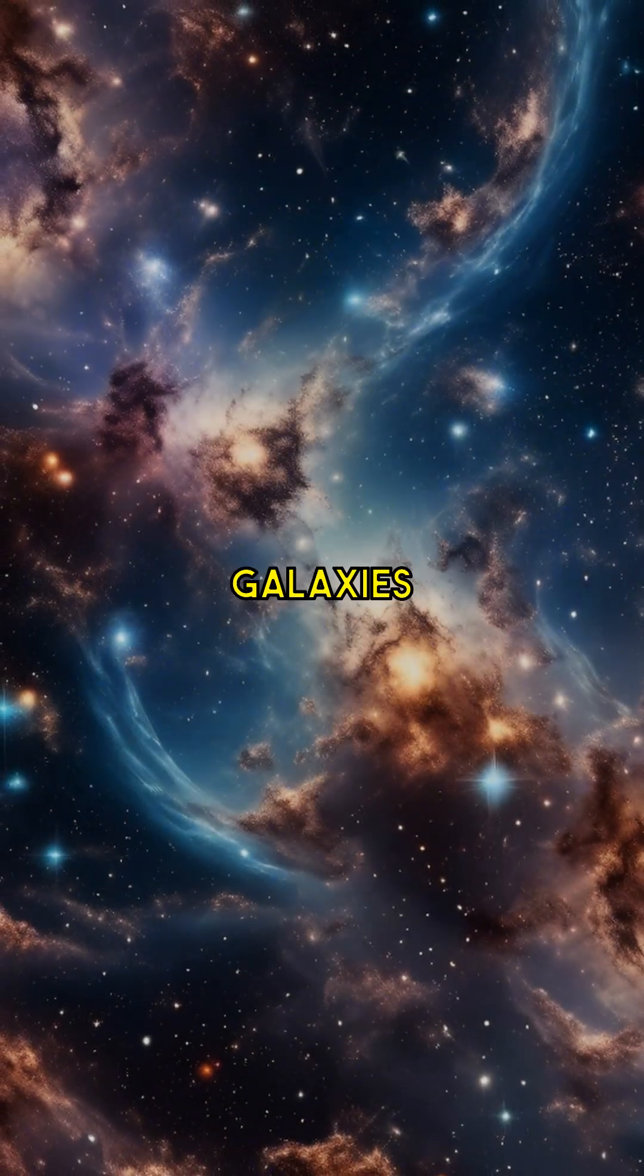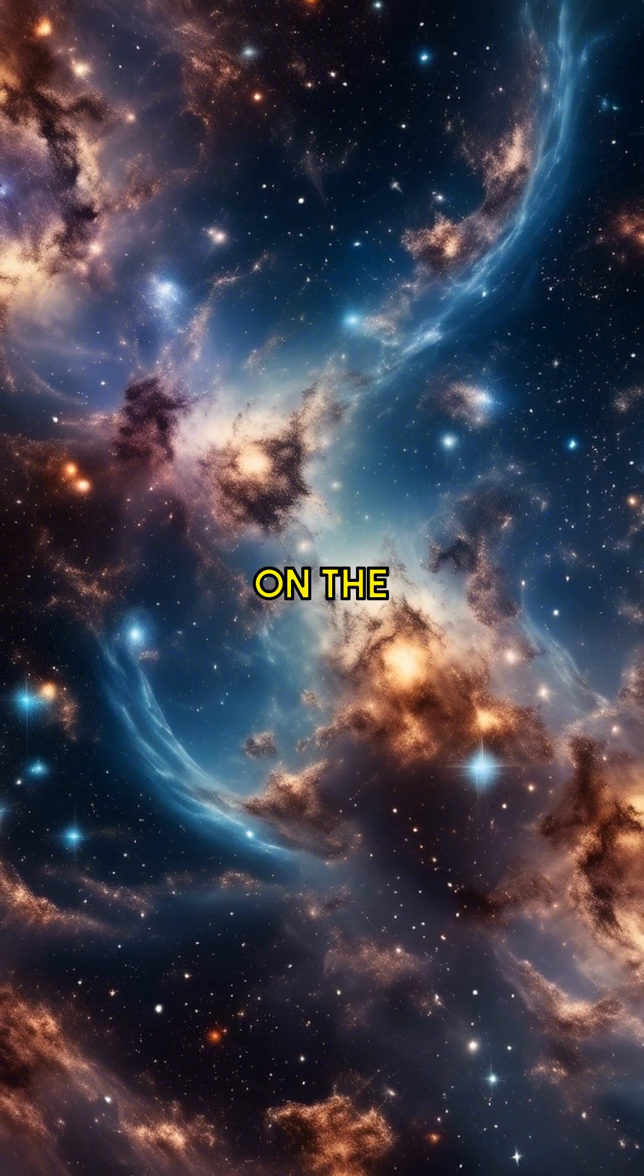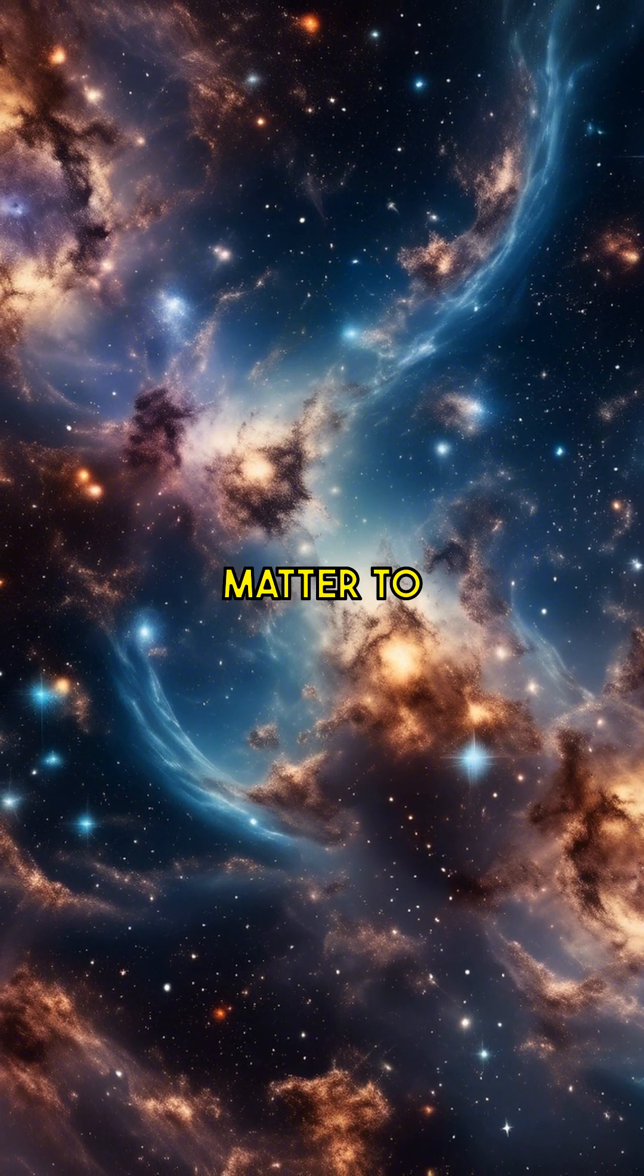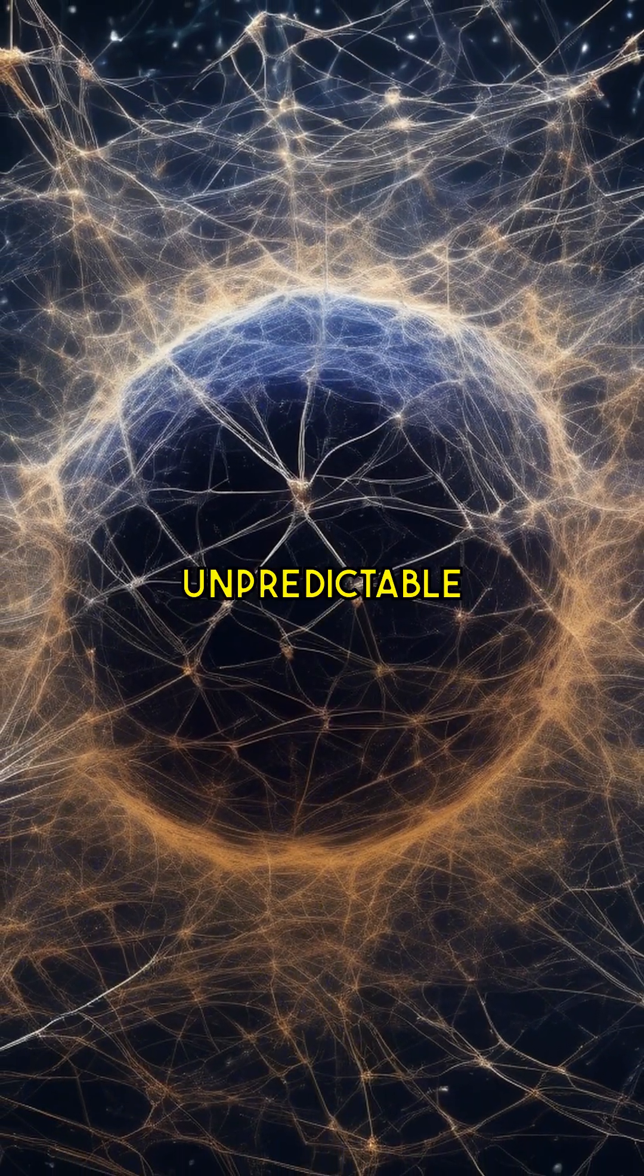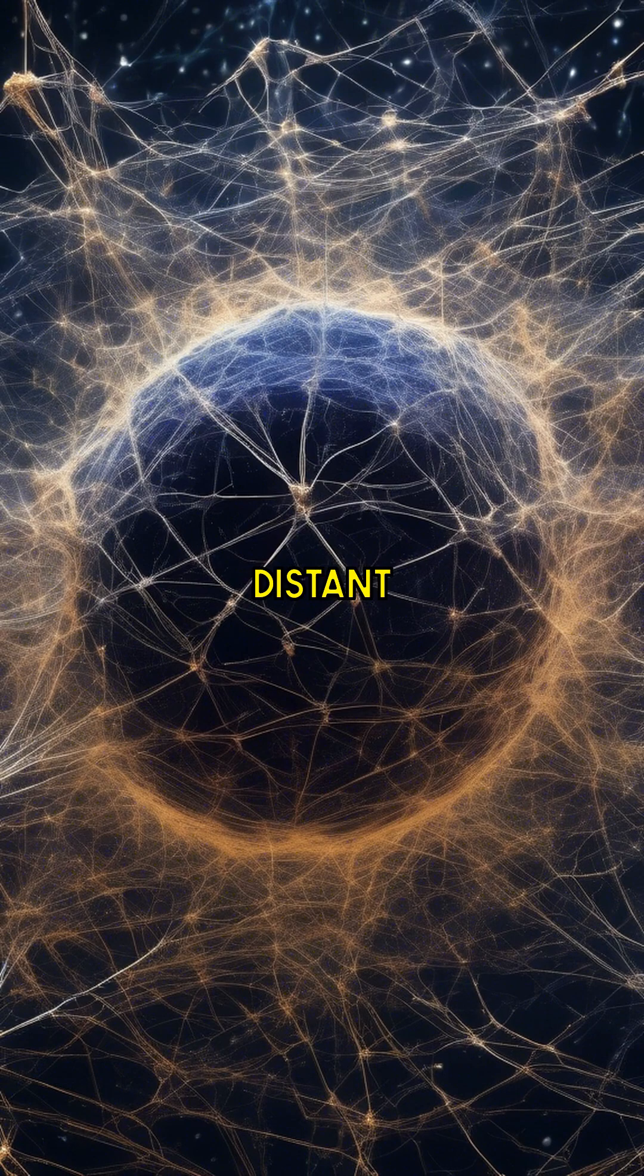Planets, stars, and galaxies rely on the gravitational pull from dark matter to maintain their orbits. Removing it would make orbits highly unpredictable and chaotic. Light from distant objects would still travel towards us,